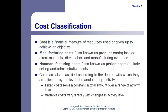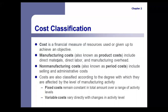Manufacturing costs are comprised of three different costs: direct materials, direct labor, and manufacturing overhead costs. These are also known as product costs because these are the costs that go directly into a product, or that are associated with making a product.